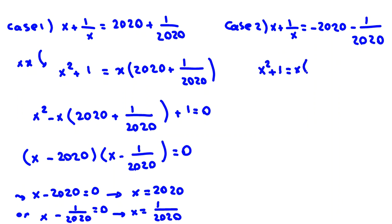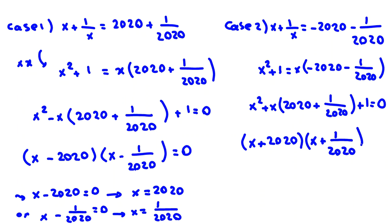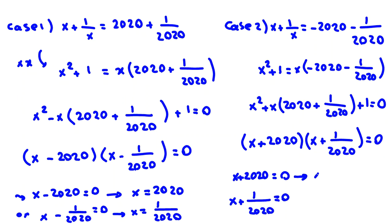In Case 2, multiplying by x: x squared plus 1 equals x times negative 2020 minus 1 over 2020. Taking this to the left-hand side with sign changed: x squared plus x times 2020 plus 1 over 2020 plus 1 equals 0. Factorizing: x plus 2020 times x plus 1 over 2020 equals 0. So x plus 2020 equals 0 giving x equals negative 2020, or x plus 1 over 2020 equals 0 giving x equals negative 1 over 2020.